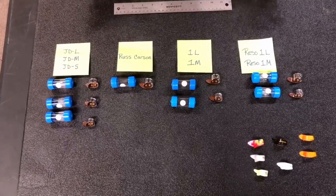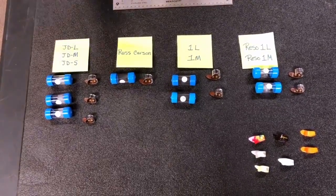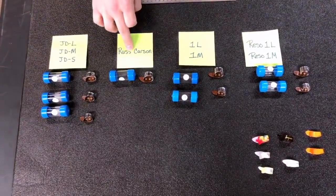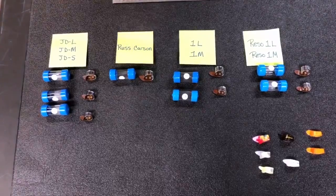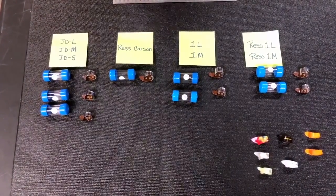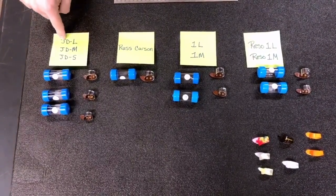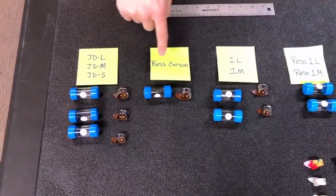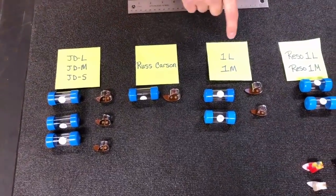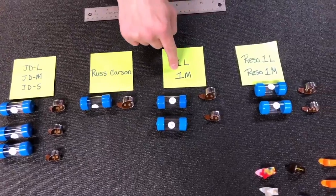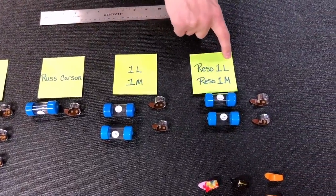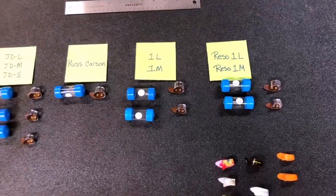Here we have the four different types. Now the different types come in different sizes, some of them come in more sizes than others. For example, the Russ Carson Signature is only available in a large at this present time. We have the JD Crowe model in small, medium, and large, we have the Russ Carson model in large, we have the standard 1L and 1M, this was the first offering from Blue Chip, in medium and large, and then we have the Rezo 1L and 1M.